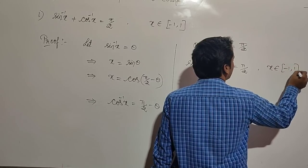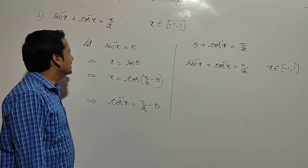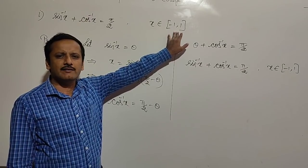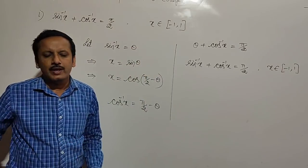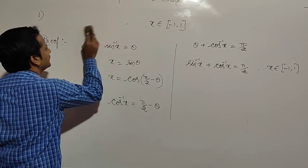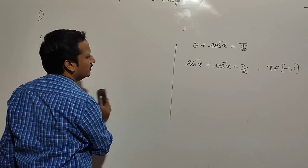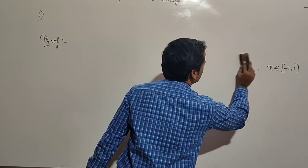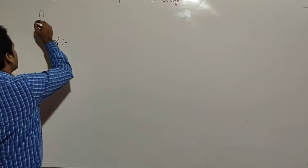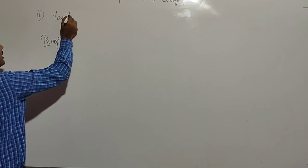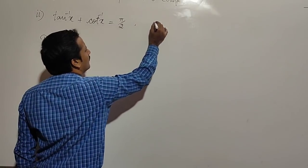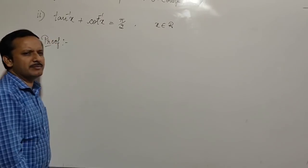This result holds for x belonging to the closed interval minus 1 to 1. This is the first result: sin inverse x plus cos inverse x equals pi by 2. Now let us look at the second result: tan inverse x plus cot inverse x is equal to pi by 2, for any real value of x.